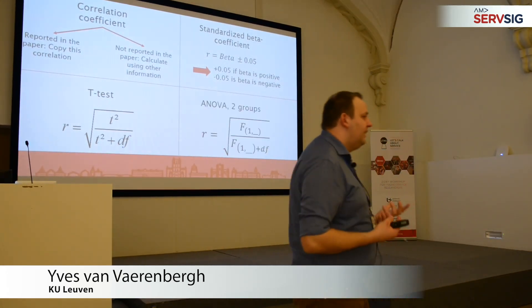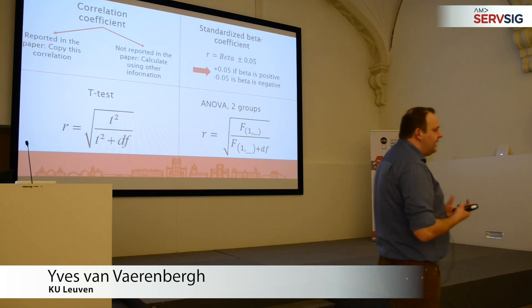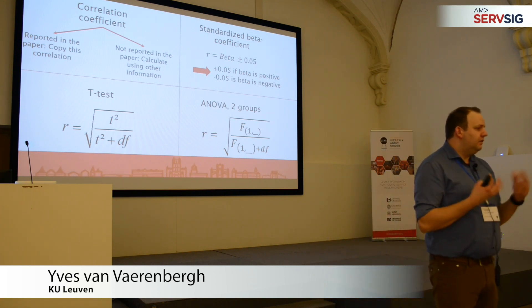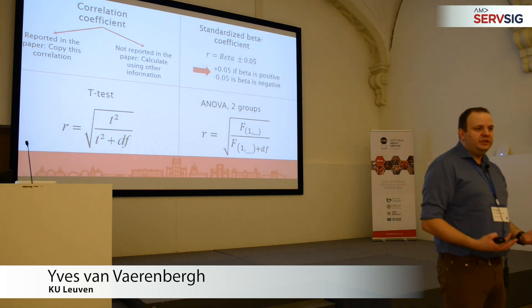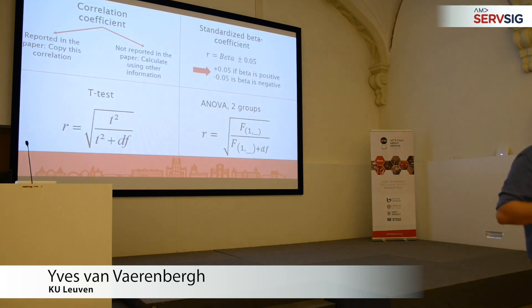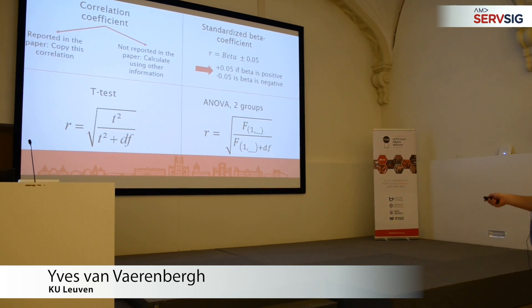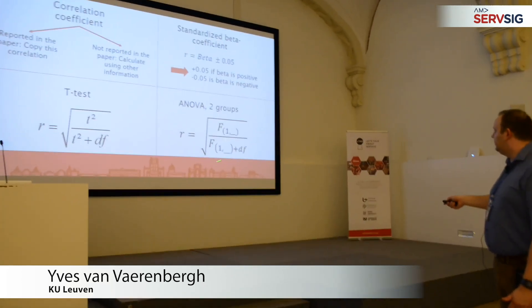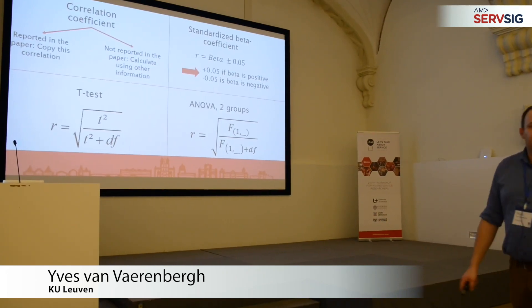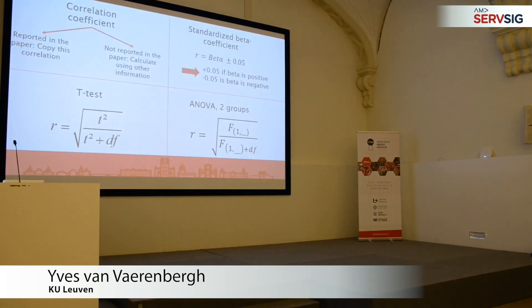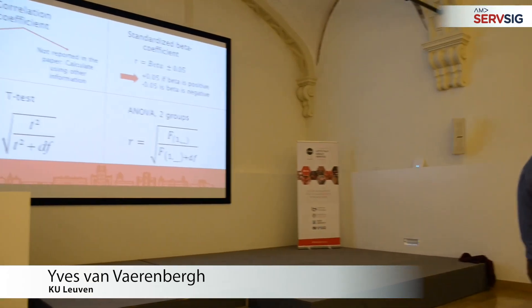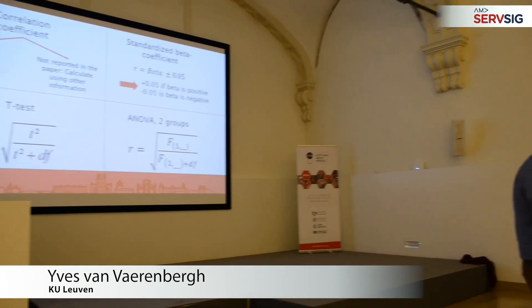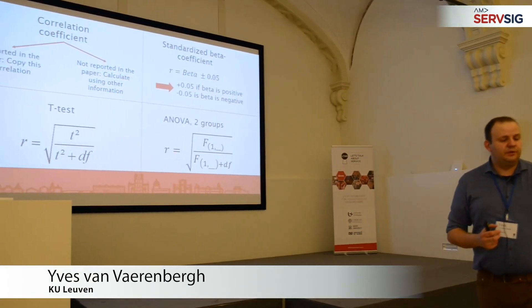With an f-value, people with a little more advanced statistics knowledge know that an f-value is simply the square of a t-value. So you do the same procedure: put the f-value in the numerator, add the degrees of freedom in the denominator, and take the square root. Basically, every statistic that we observe in a paper can be converted into a correlation coefficient. These are the most commonly used statistics, so we're only showing those.